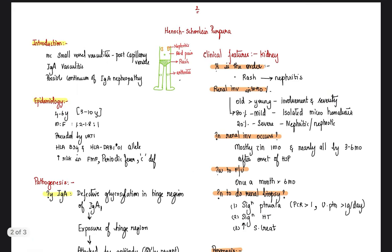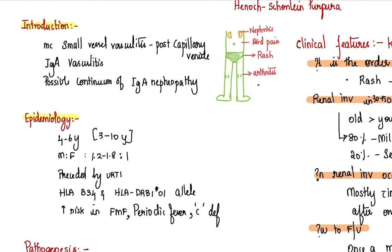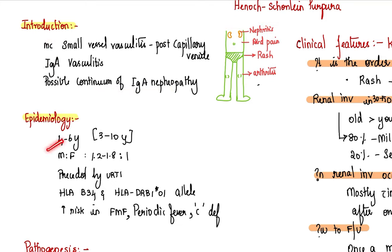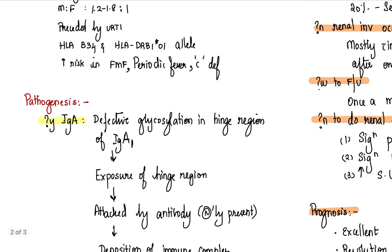And relapse, if it occurs, is going to occur in skin, and rarely only is it going to affect your joints or your kidneys or GIT. Relapse most commonly involves skin. So this is about Henoch-Schonlein purpura. Let's have a quick revision. Introduction: most common vasculitis, IgA vasculitis. It's a continuum of IgA nephropathy and tetrad of nephritis, abdominal pain, rash, and arthritis.